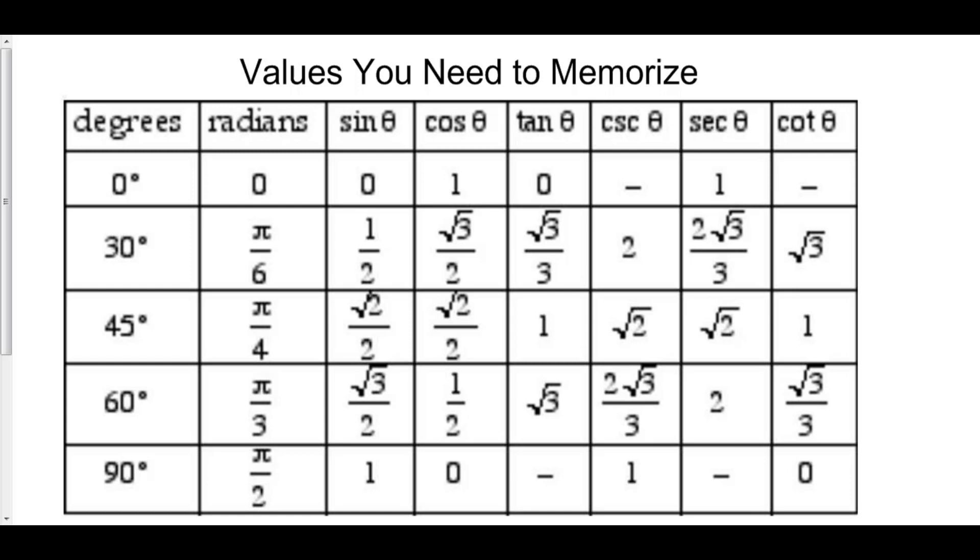Likewise, cosecant and secant, well cosecant is defined as 1 over sine. Secant is defined as 1 over cosine. So if you memorize sine and cosine of these angles right here, then you'll have tangent by dividing them. You'll have cosecant and secant by doing 1 over. You'll also have cotangent by doing cosine over sine.